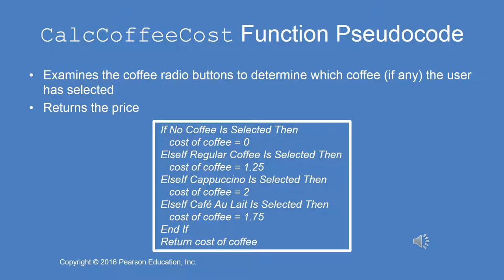Coffee selection is handled with radio buttons. If no coffee is selected, the cost of coffee is assigned zero. Else if it's regular, $1.25; else if it's cappuccino — notice these are mutually exclusive because these are radio buttons, so you're not adding values together. You can't select two different types of coffee. Thus you need else-ifs, not if/end-if strung together. Ultimately it returns the cost of the coffee.